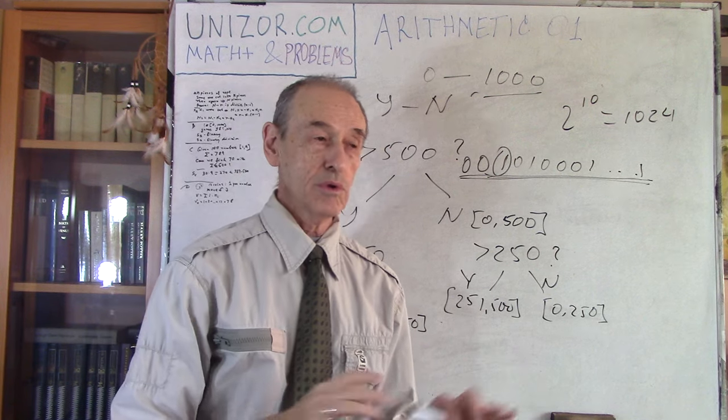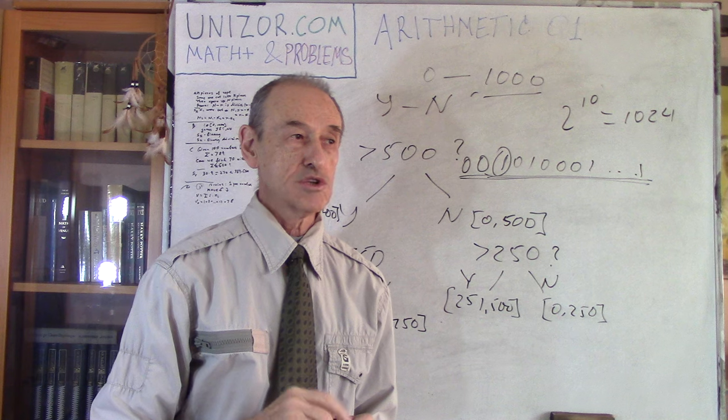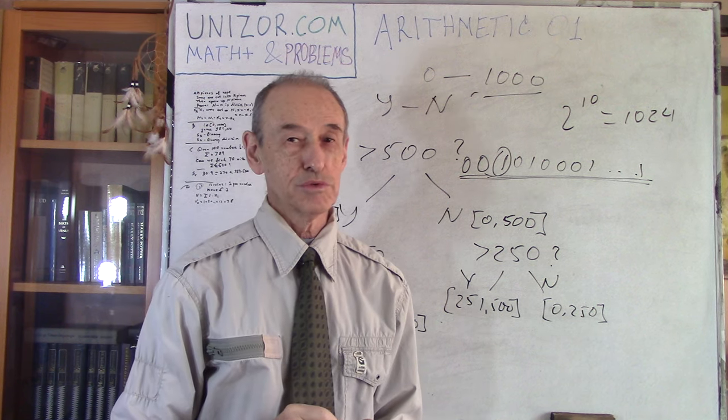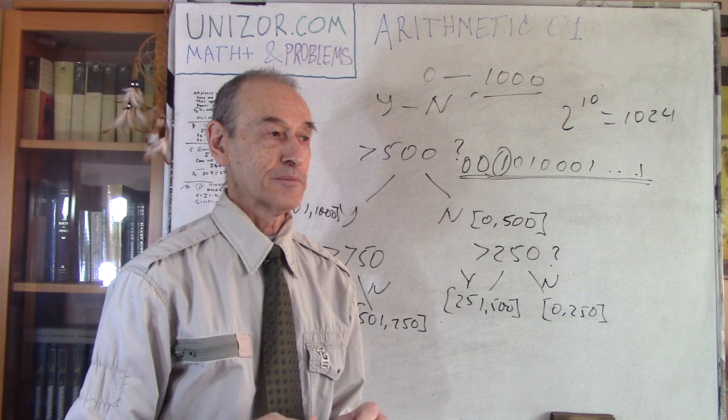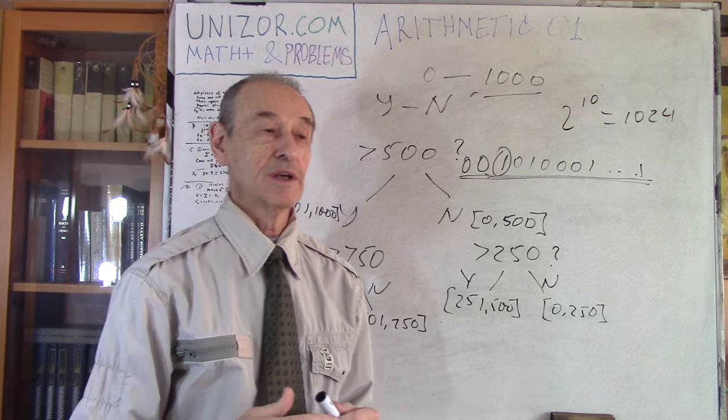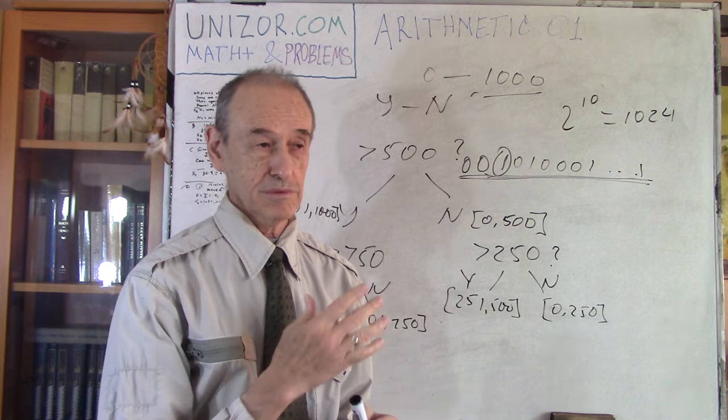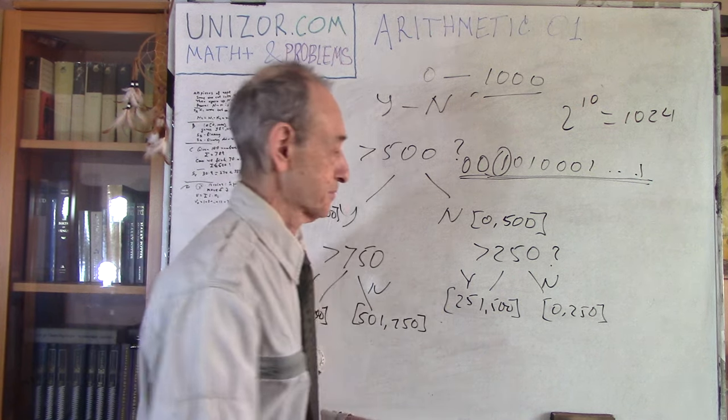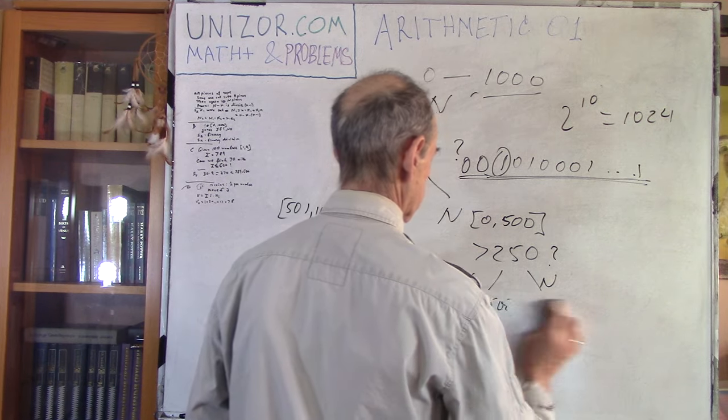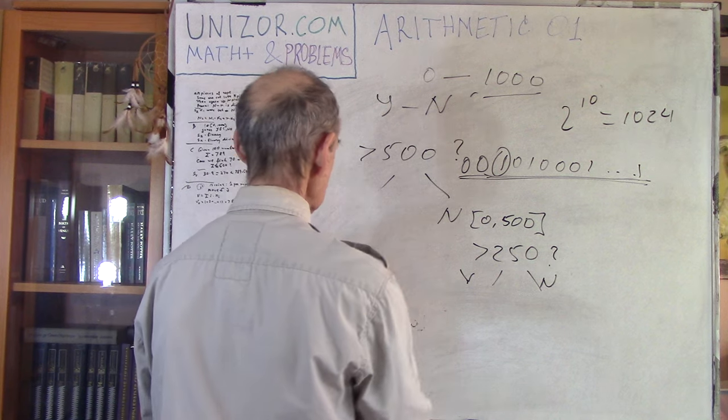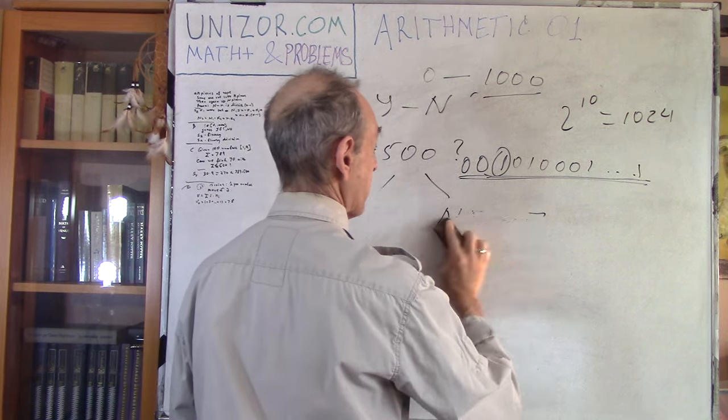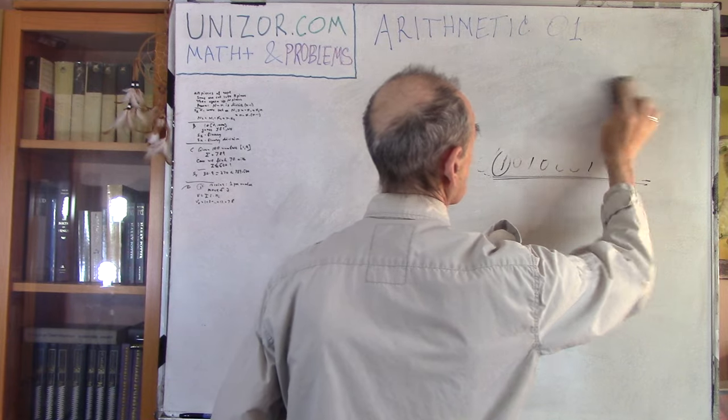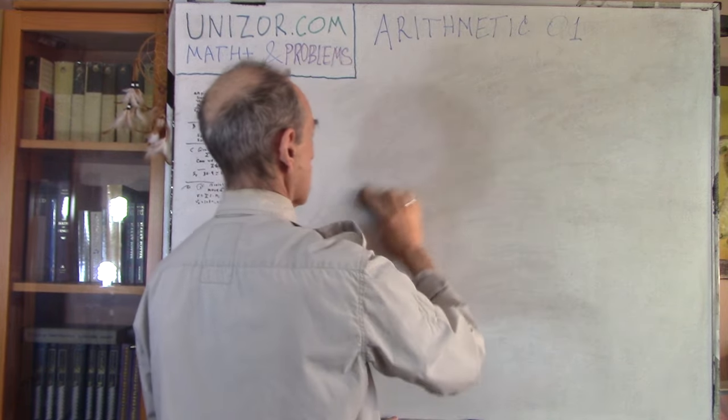Now, I don't want to discuss right now the issue, why this is the shortest way to get to the number. I would suggest you to do it yourself. And that's a very interesting, actually, part of the whole thing. You can send me an email which is on every webpage of theunizor.com. You can send me your thoughts and I will share it with everybody. This binary division methodology is really very practical. It's used in many computer programs which are involved in some search algorithms.